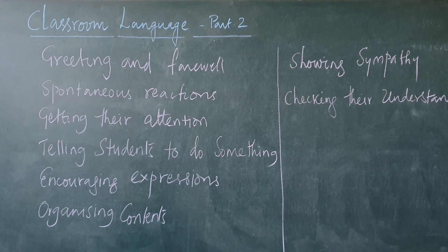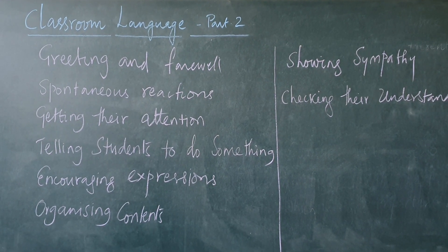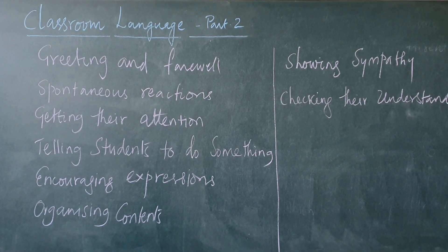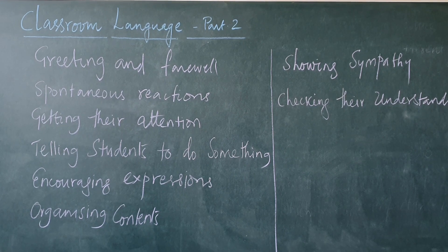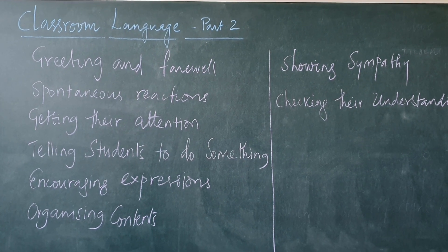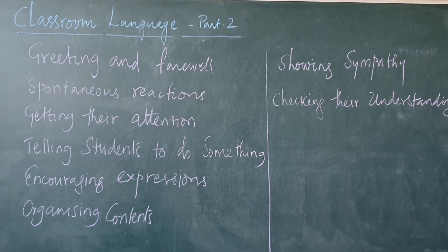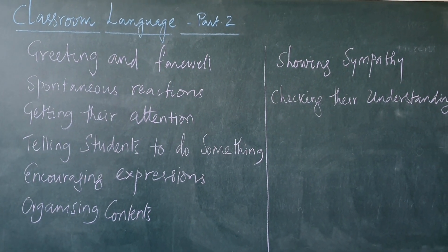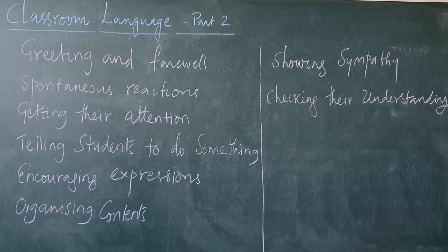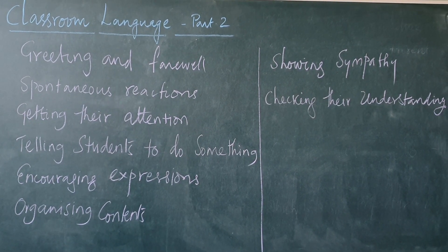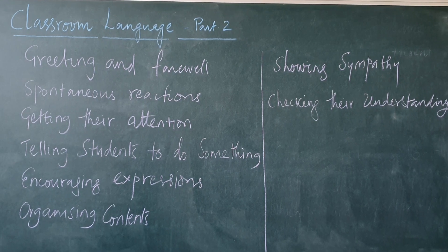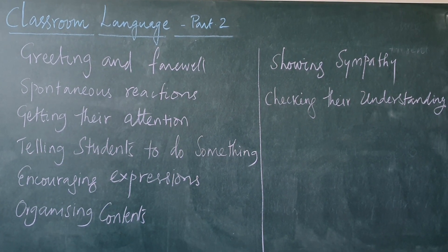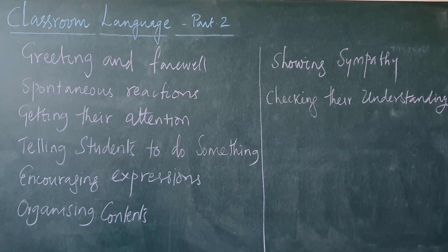Then there is showing sympathy. These are the structures we can use: make it simpler, make it easier, please try again, please try once more, tell me once again please, say it again, I do not get it, can you repeat please, what do you mean by this, it is the other way round, use your brain, please relax.